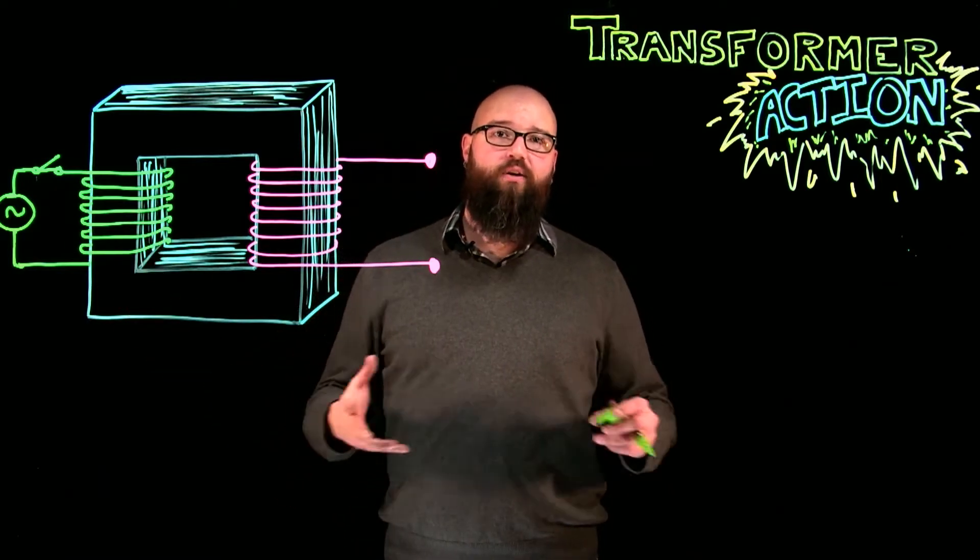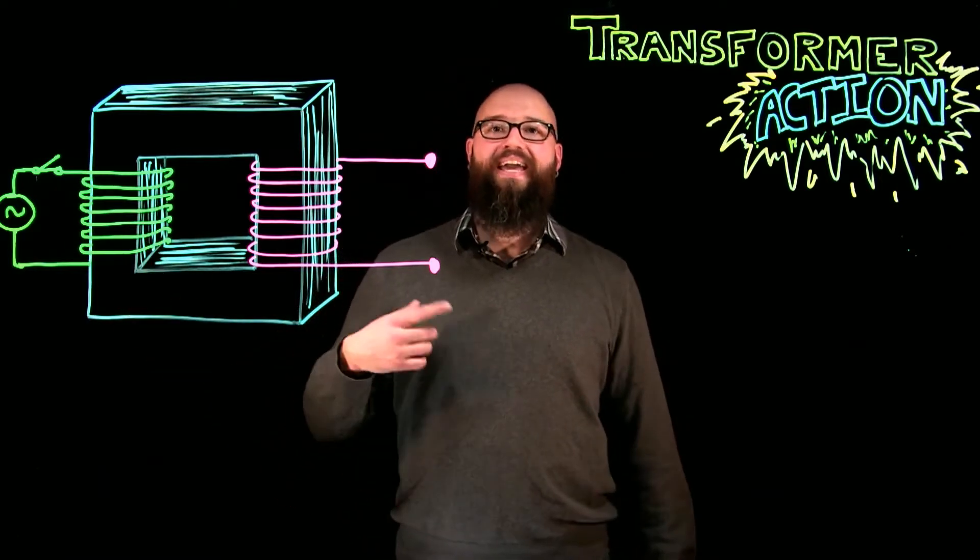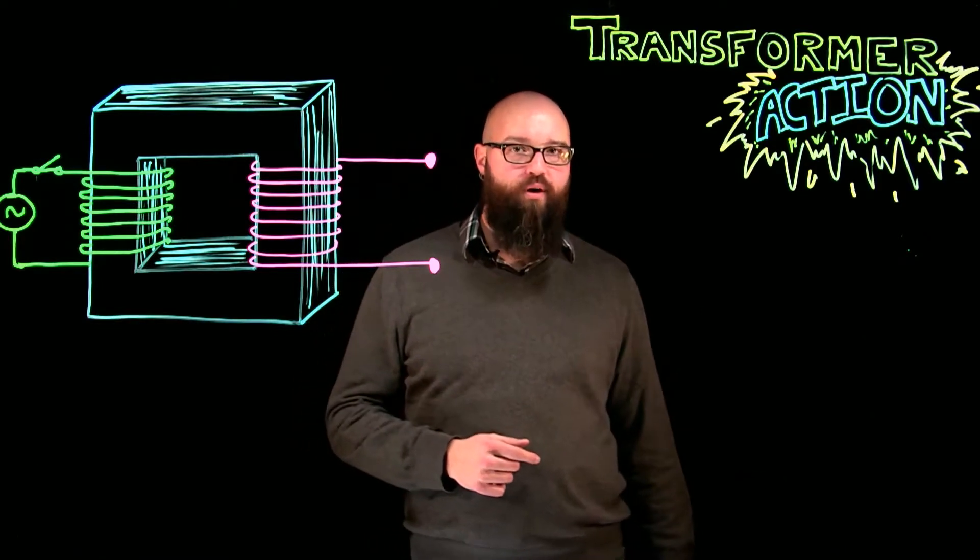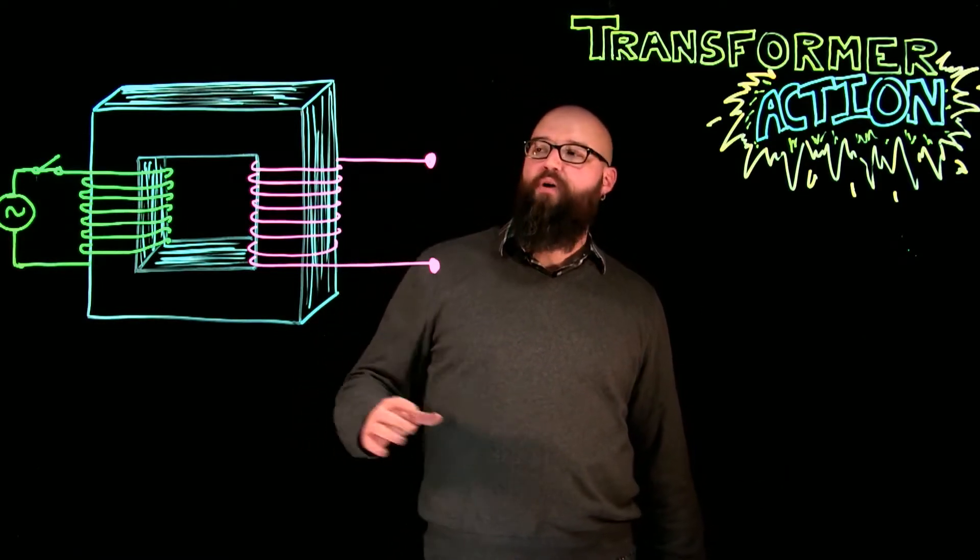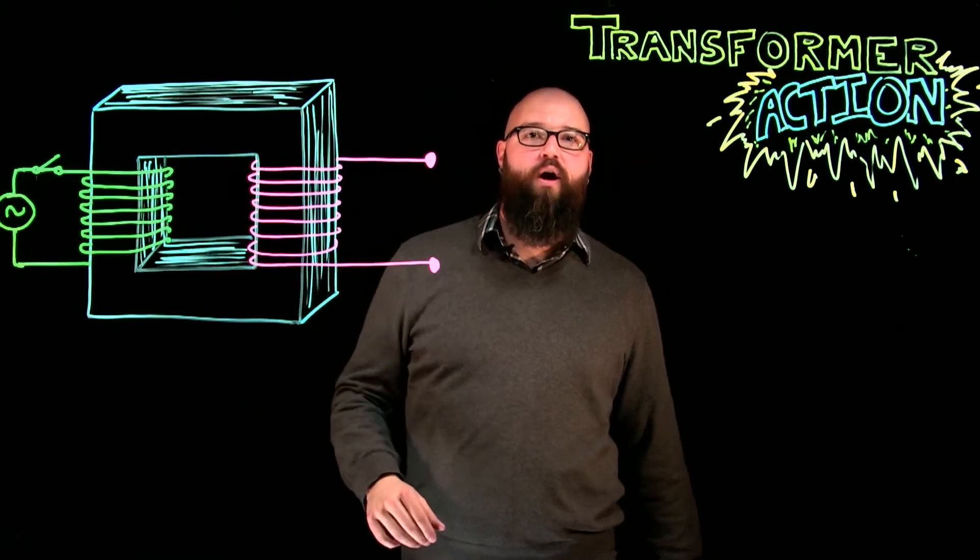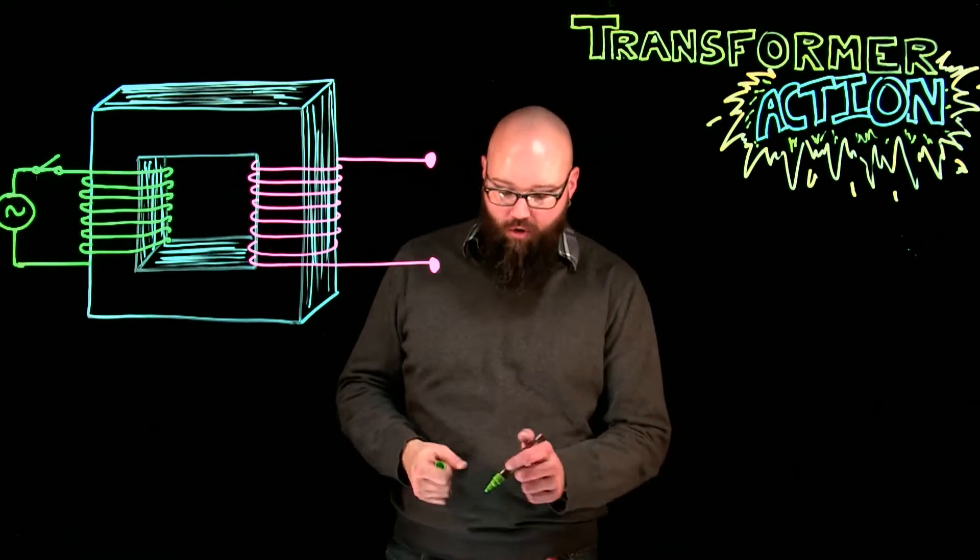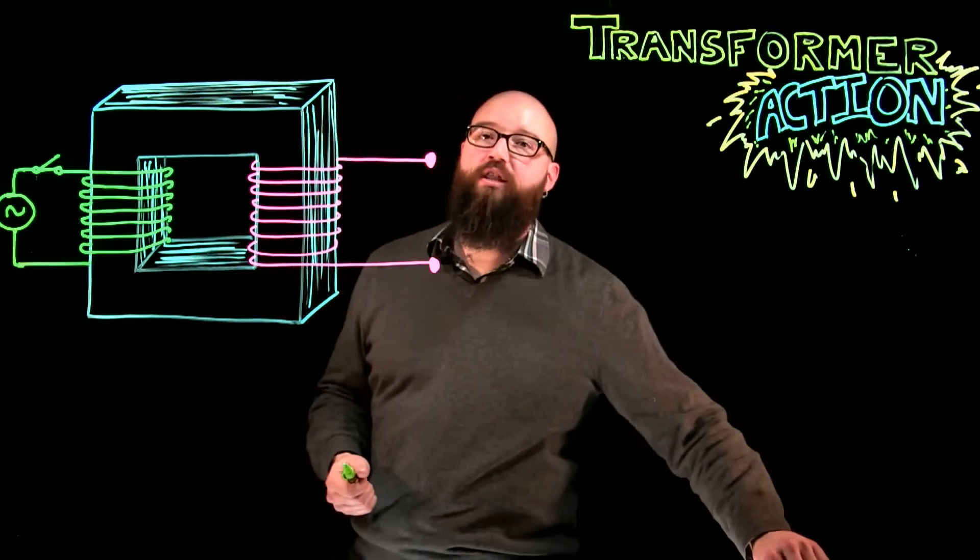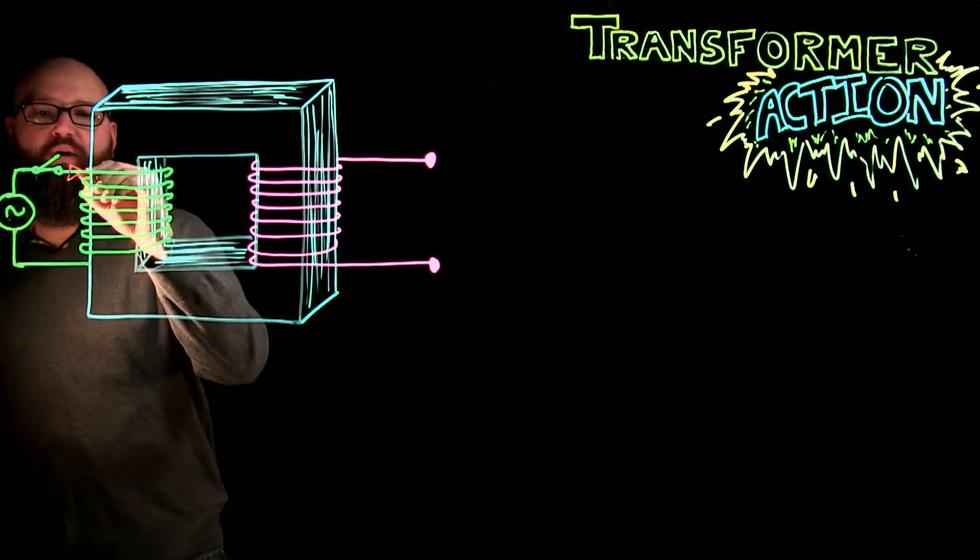we get a changing magnetic field, which causes a counter-EMF in the primary. That counter-EMF in the primary is what's going to initially limit the current on the primary. So, it's going to be a very small amount of current flowing in the primary right at this point where we close this switch.